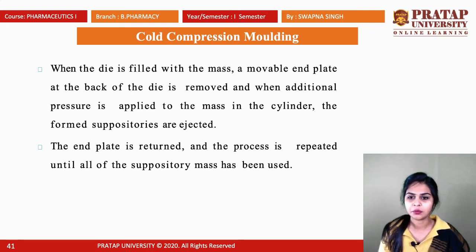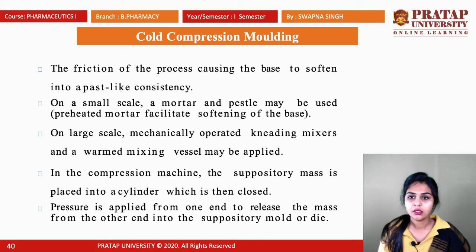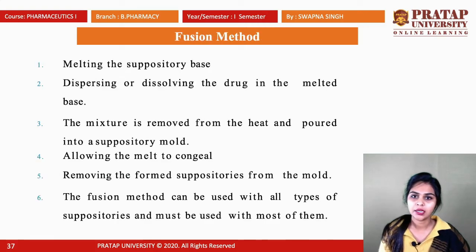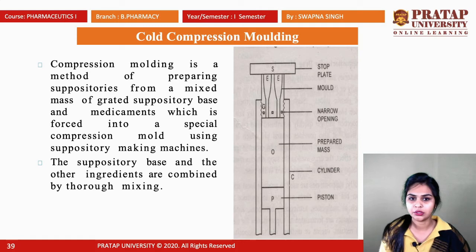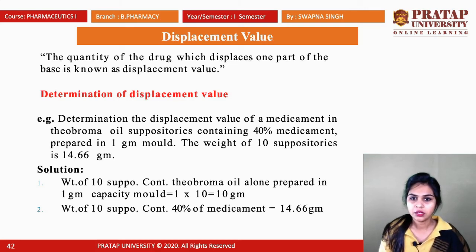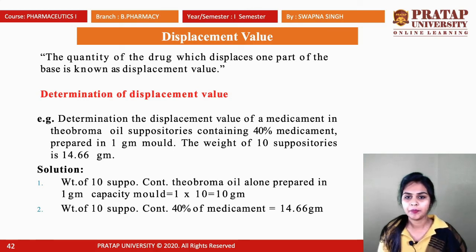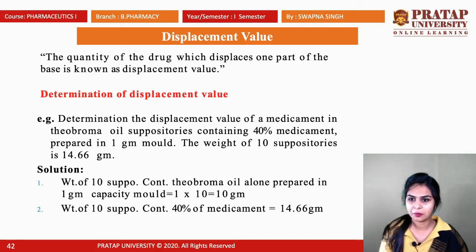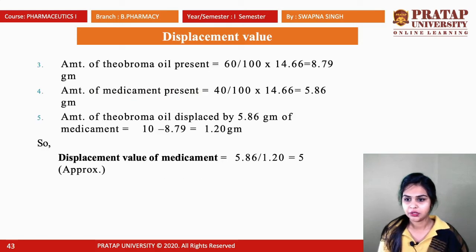The three methods of preparation are: hand rolling method, fusion method, and cold compression molding. Next is displacement value — the quantity of drug which displaces one part of the base is known as displacement value. Determination of displacement value is very necessary in suppository preparation. For example, a numerical problem: determination of displacement value of a medicament in theobroma oil suppository containing 40% medicament, prepared in a 1-gram mold with the weight of 10 suppositories being 14.66 grams — using the formula, we can calculate the displacement value.